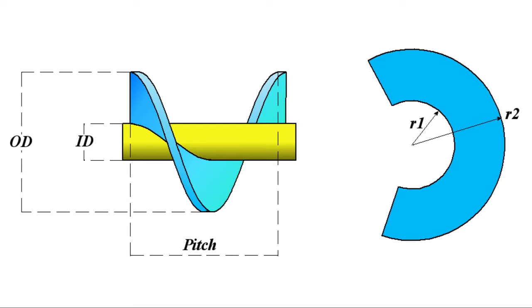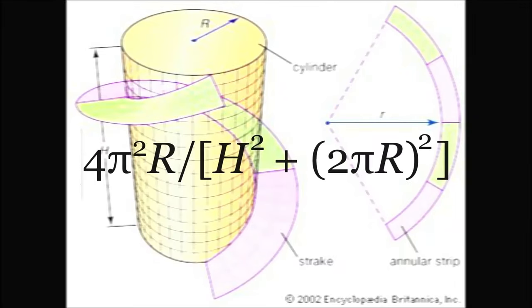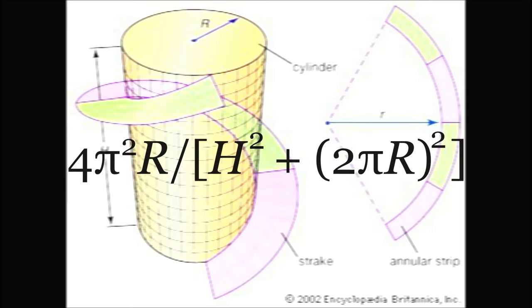There must be a mathematical relationship between the pitch required and the radius of the helical strip when flattened out. There is. According to the Encyclopedia Britannica, it's 4π²r over (h² + 2πr)².